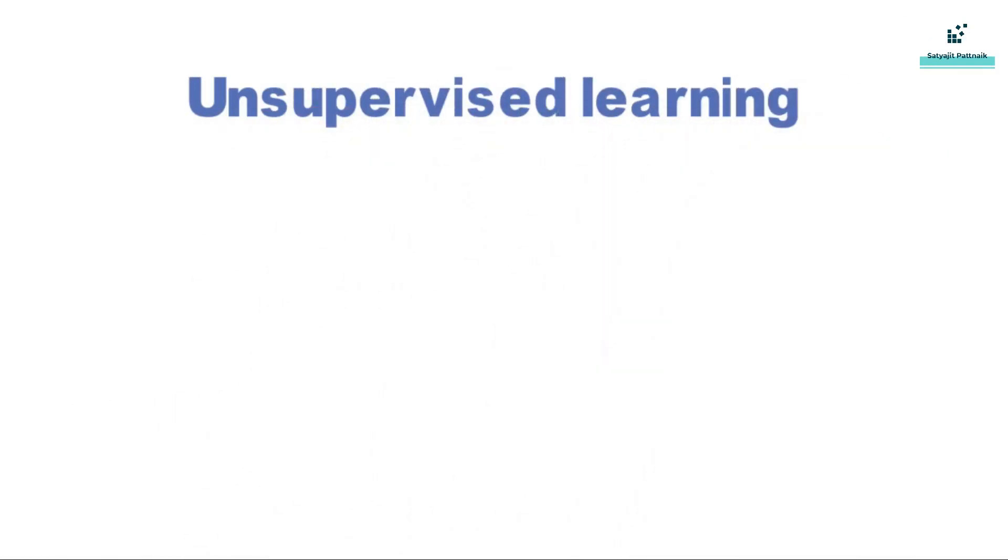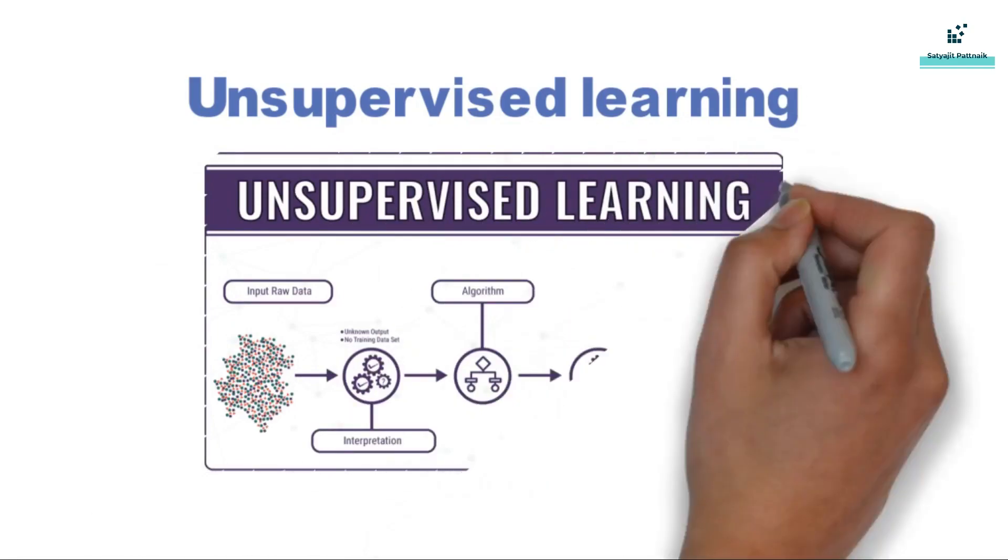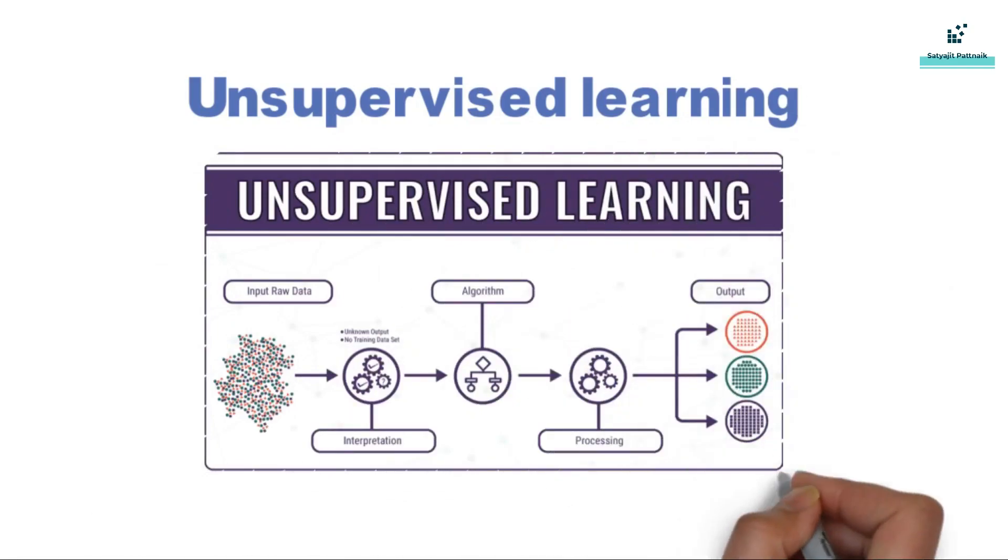Unlike supervised learning, unsupervised learning tries to find patterns in the data without having the labeled outcomes. A simple example is customer segmentation, where we don't have labels and we don't know how many categories of customers do we have.